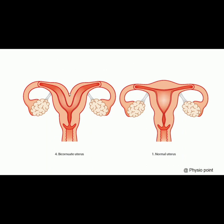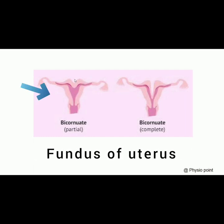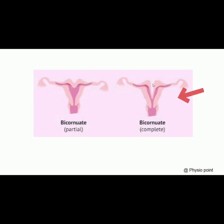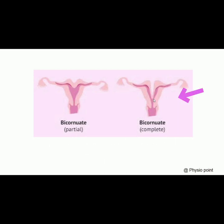We have two types of bicornuate uterus: it may be either partial or complete. In partial bicornuate uterus, the indentation is confined only to the level of the fundus of the uterus. But when the septal indentation extends up to the level of the external os or internal os of the cervix, we call it a complete bicornuate uterus.